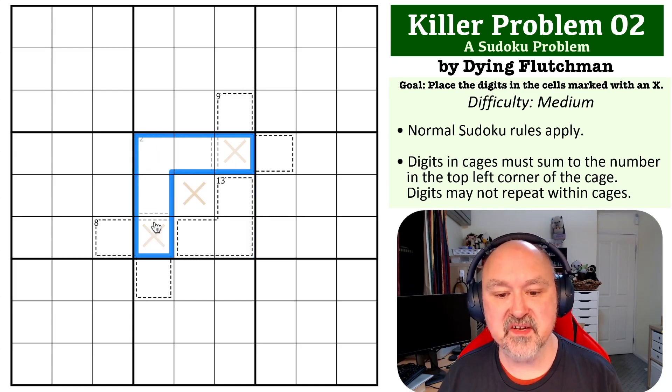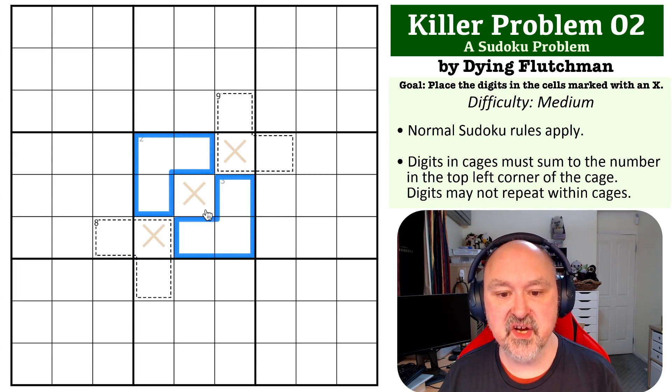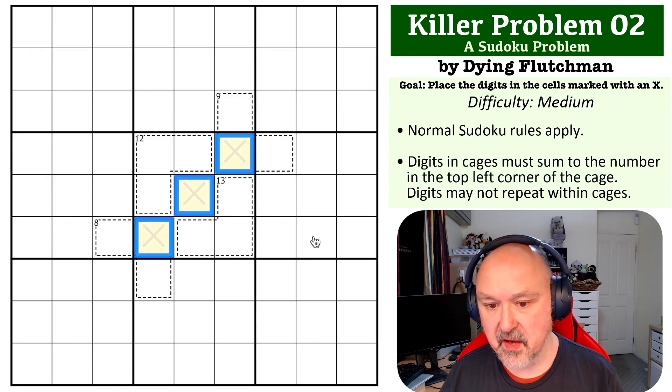But we've got a 12 and a 13 cage, so if you subtract 12 and 13 from 45, those are 25, these have to sum to 20. So you know these sum to 20 now. So that's the yellow cells, or the cells with X's in them, you know, convenient.